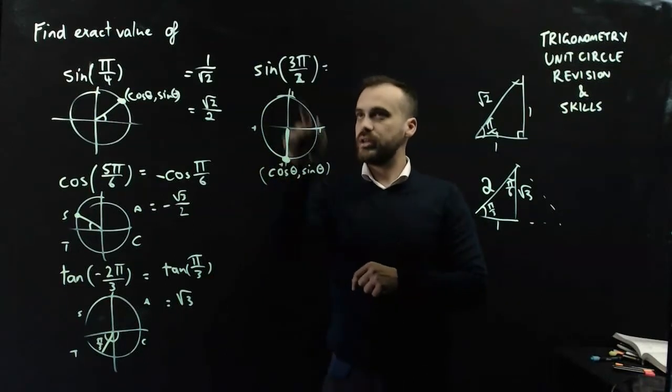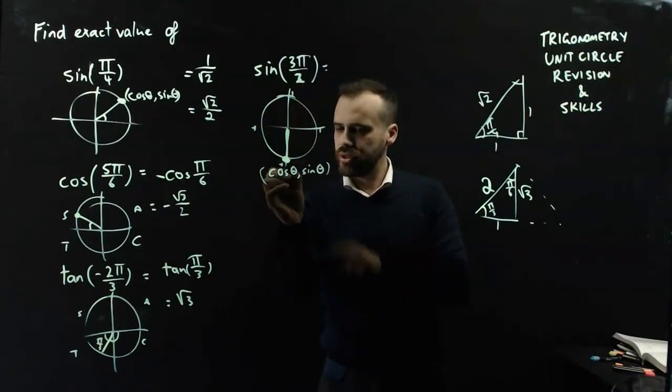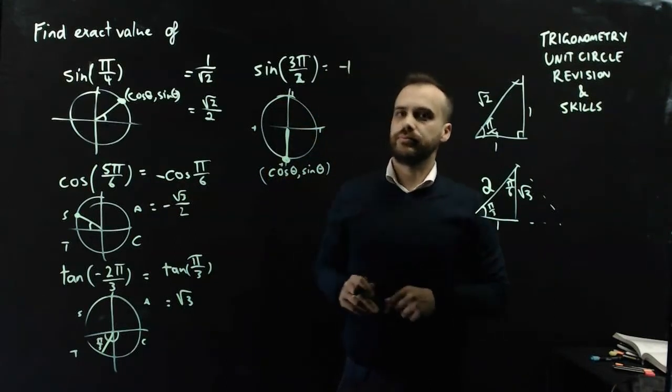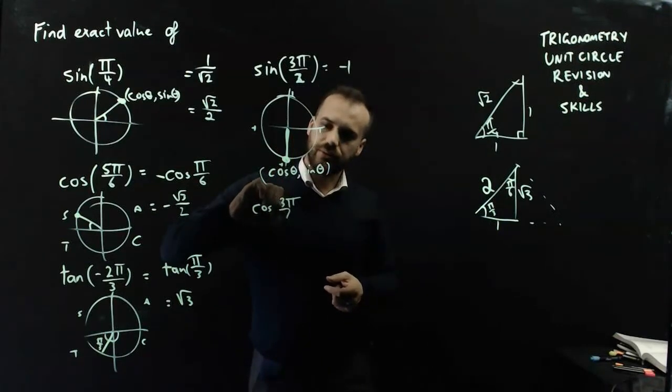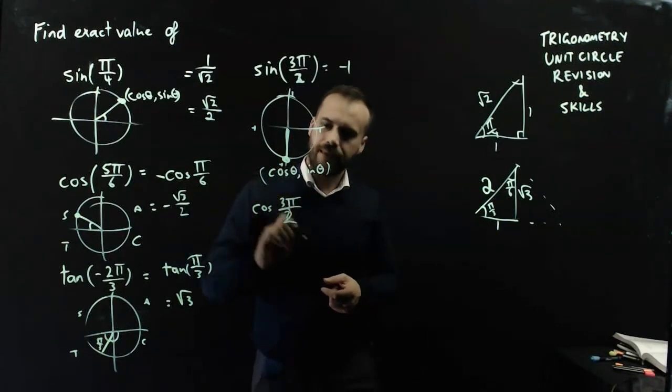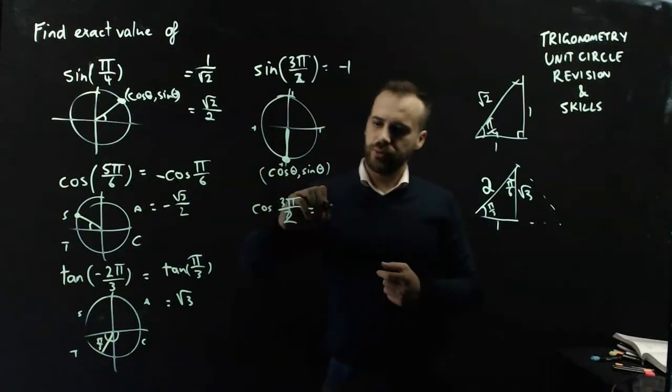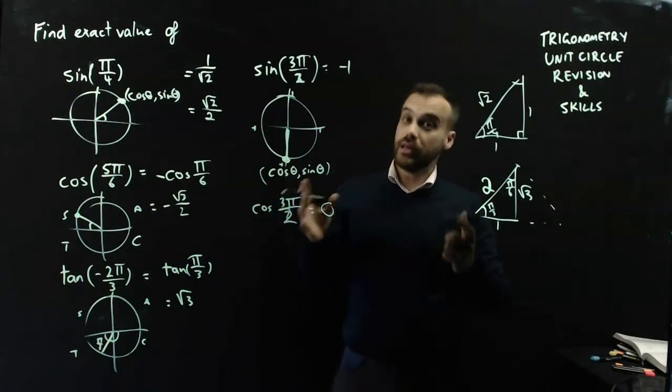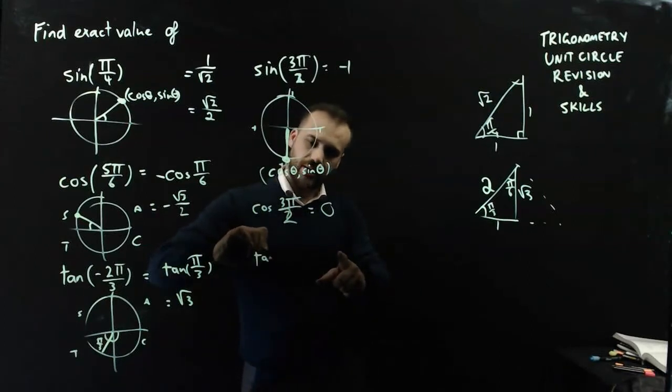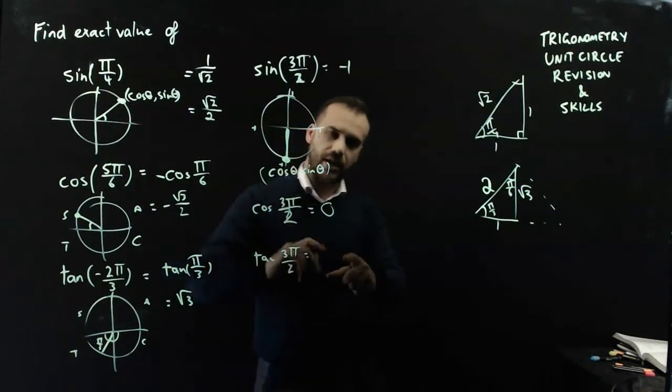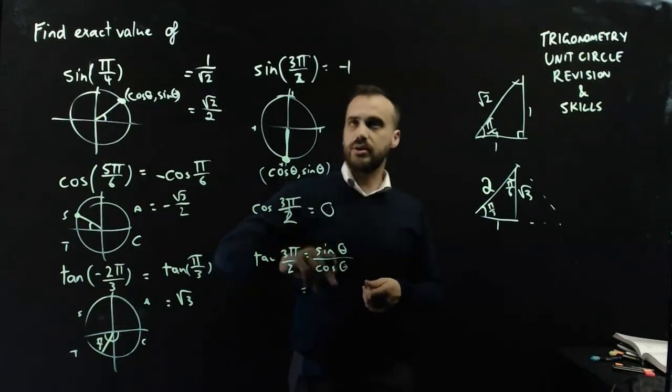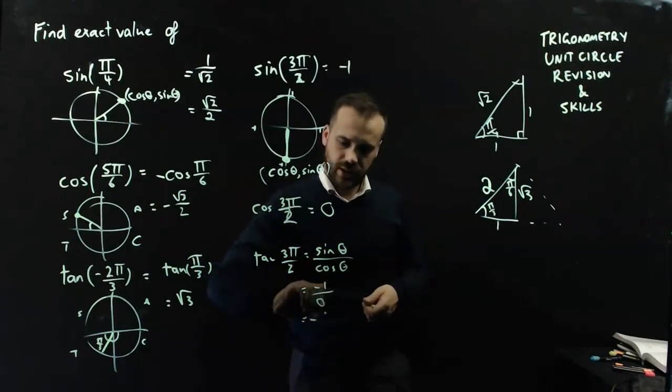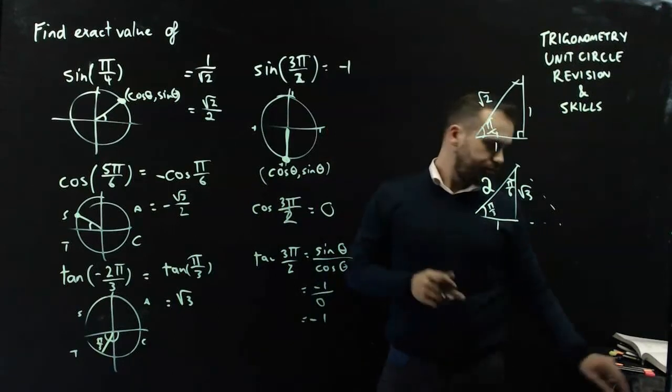So, the sin 3π on 2 is the coordinate of that, which is negative 1. If I was asked for cos 3π on 2, then that would be the x-coordinate of that dot, which would be 0. If I was asked for tan 3π on 2, then that would be equal to sin θ over cos θ, which is equal to negative 1 over 0, which is undefined.